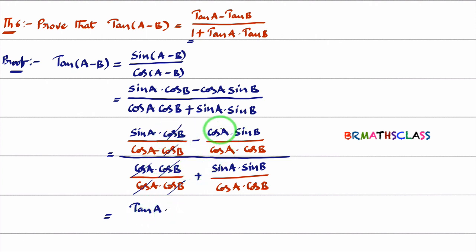Here, you look here, cos B cos B will get cancelled. Similarly, cos A cos A will get cancelled. What you will get here? Minus, tan A minus. What is there here? Sin B by cos B is nothing but tan B.